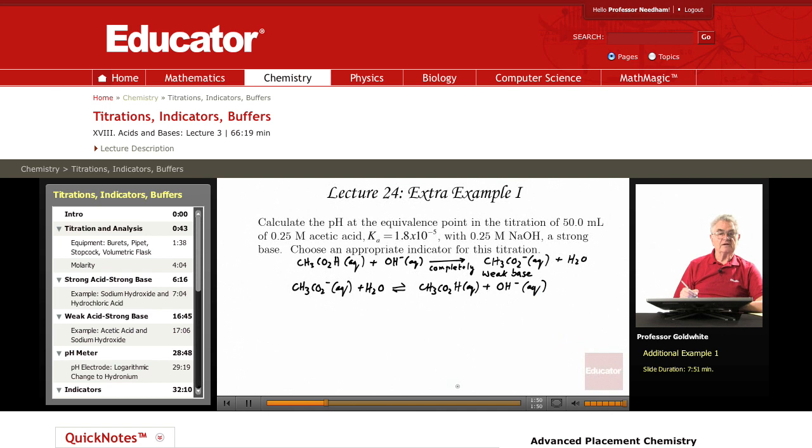And we can write a KB for that expression. Remember we will leave H2O out of any of these equilibrium expressions. Now we worked out in lecture the relationship between the KA for a weak acid and the KB for its conjugate base. Their product is KW.